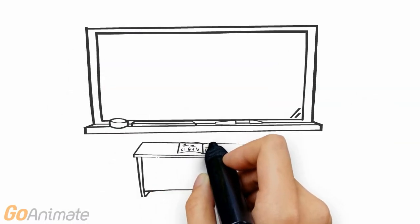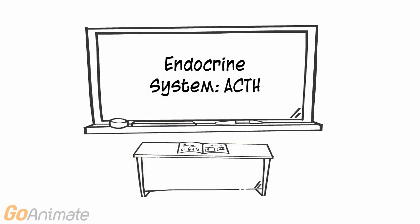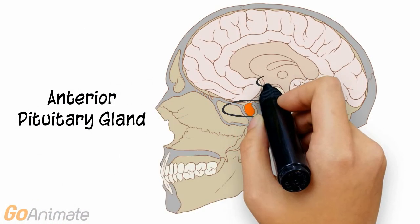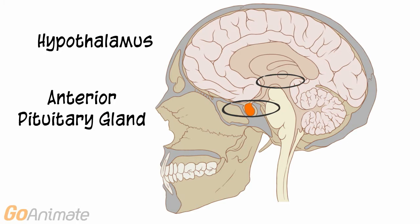Let's learn about adrenocorticotropin hormone, or ACTH. ACTH is secreted by the pituitary gland, which is linked to the hypothalamus.